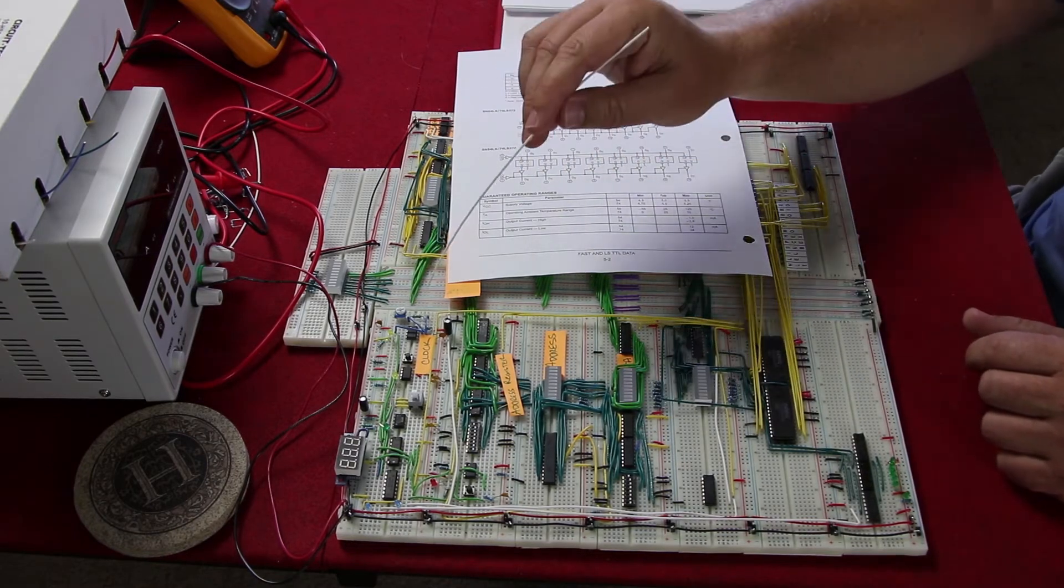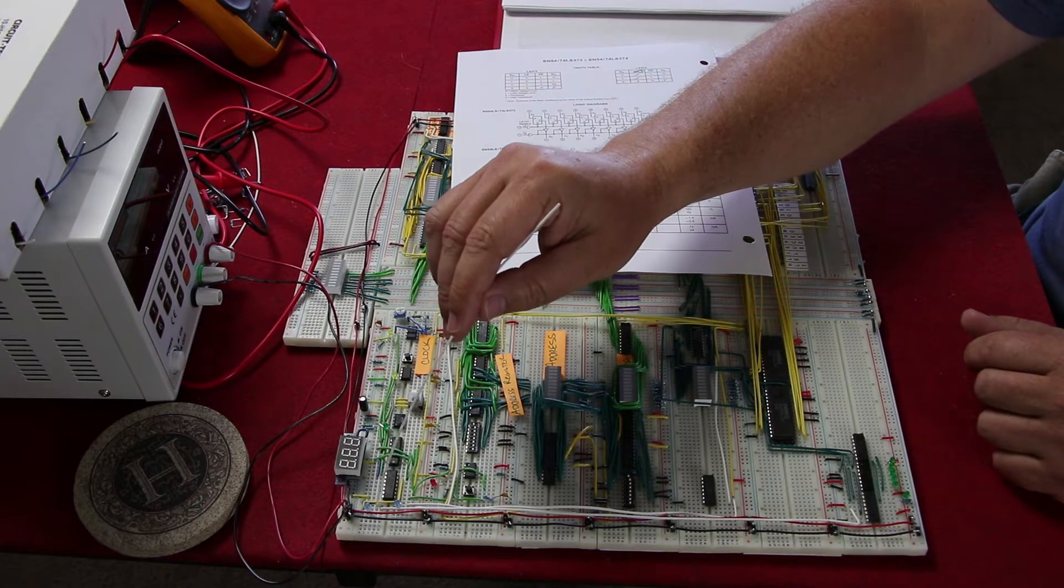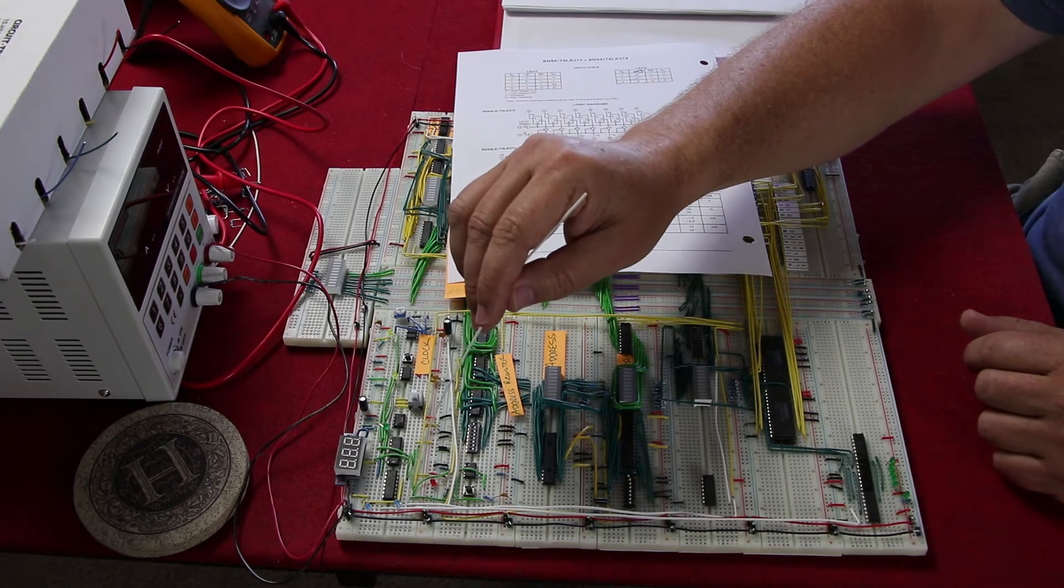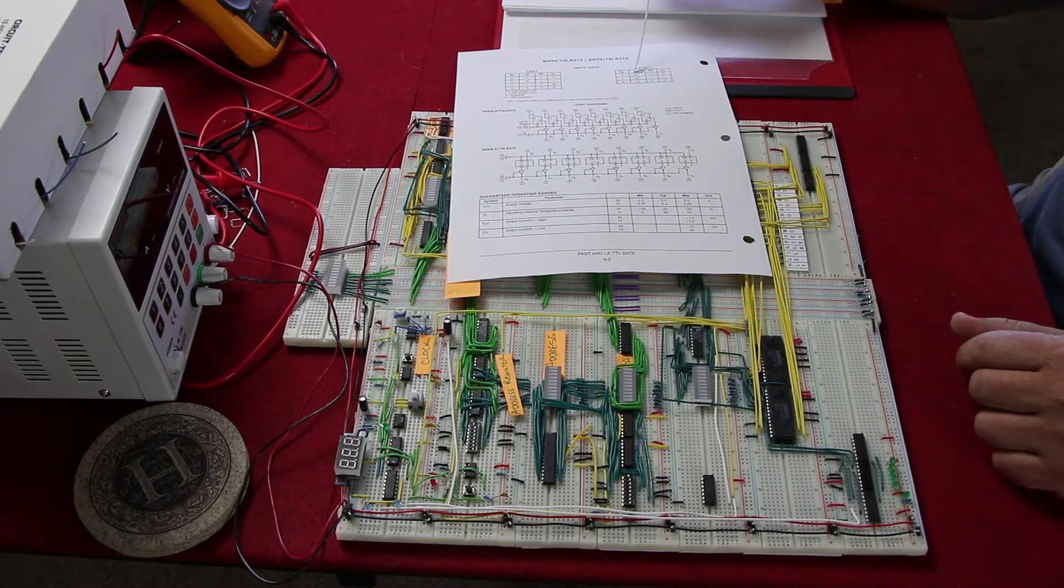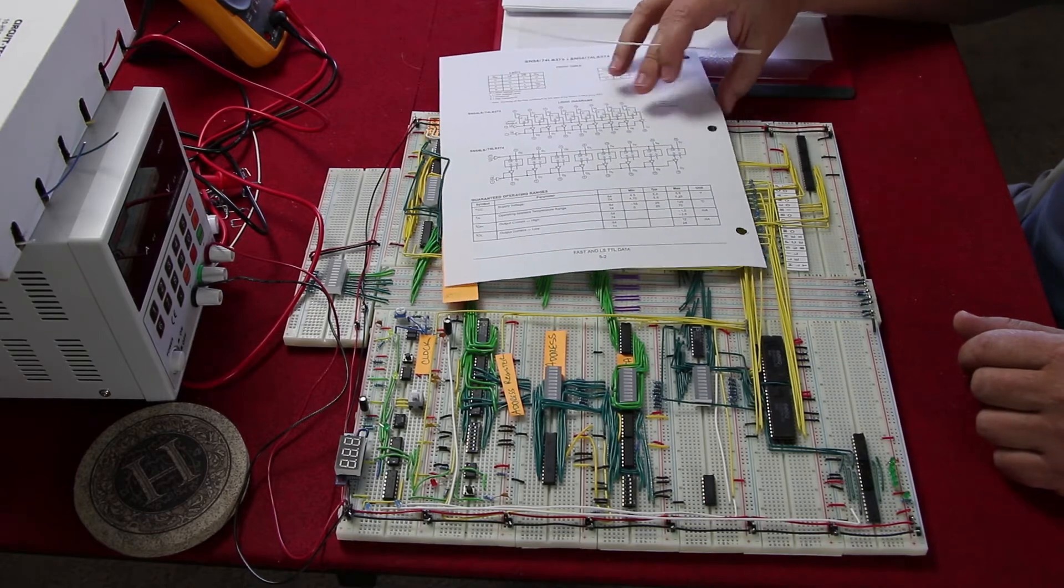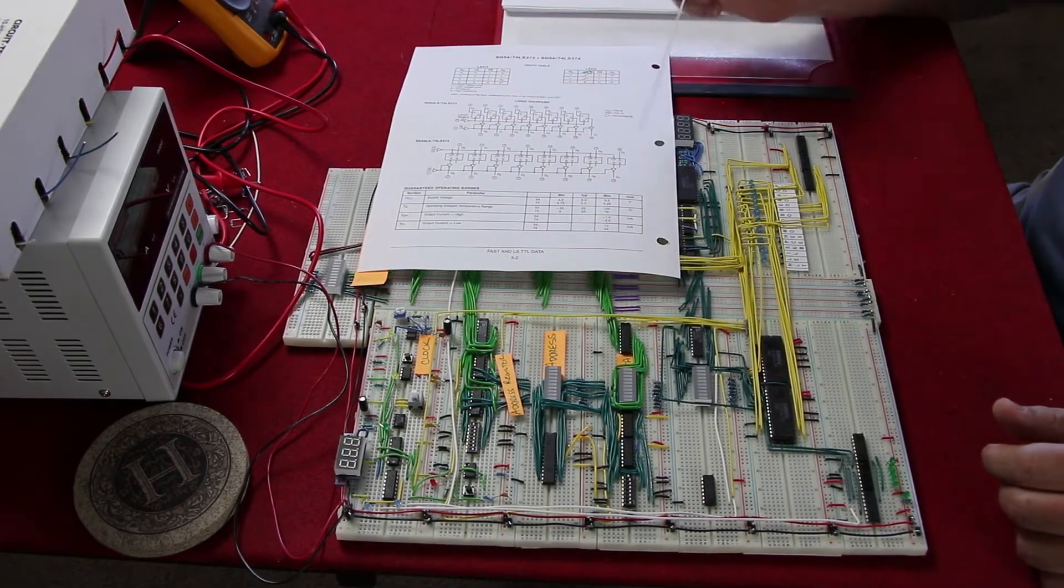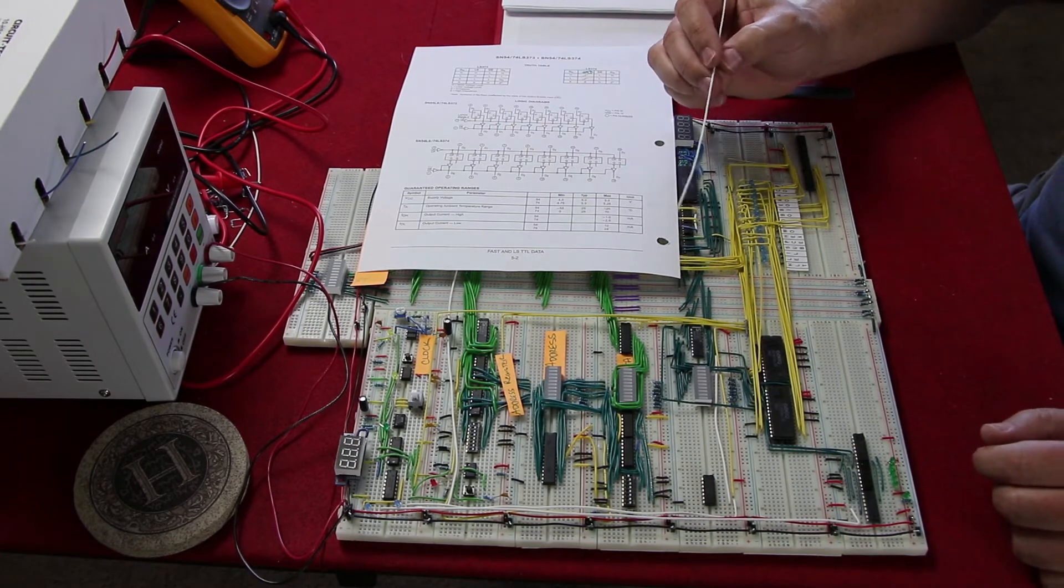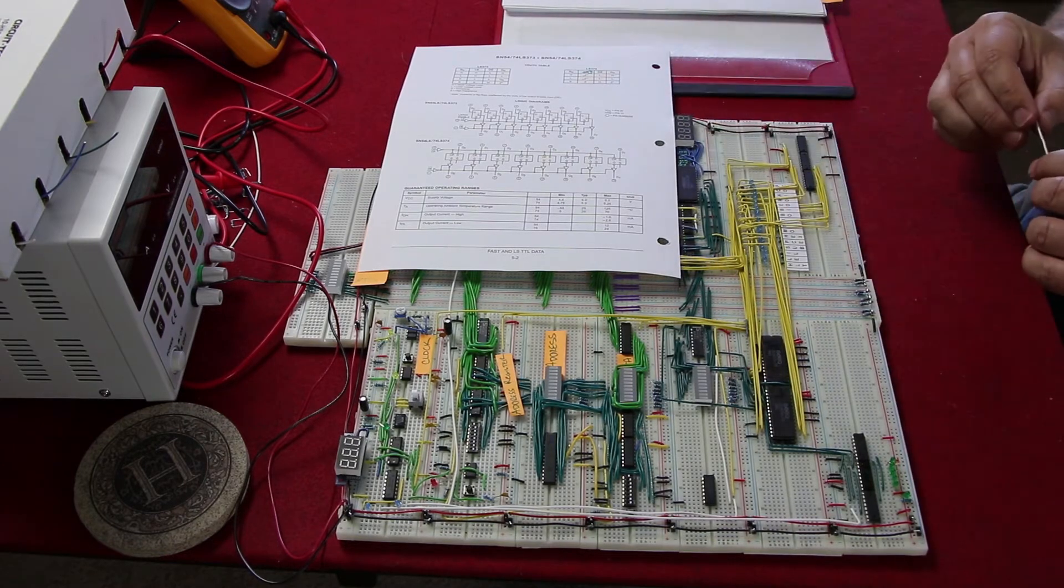Over here you can see we have the inverted clock pulse and this is the rest of the clock pulse circuitry that's controlling the rest of the computer. What I wanted to do was have my microcode with the 373s, allowing the 373 to stay open for input and modification during the whole clock pulse cycle.